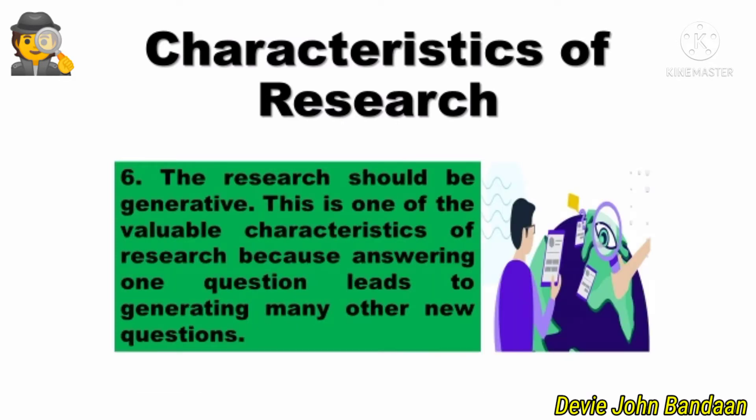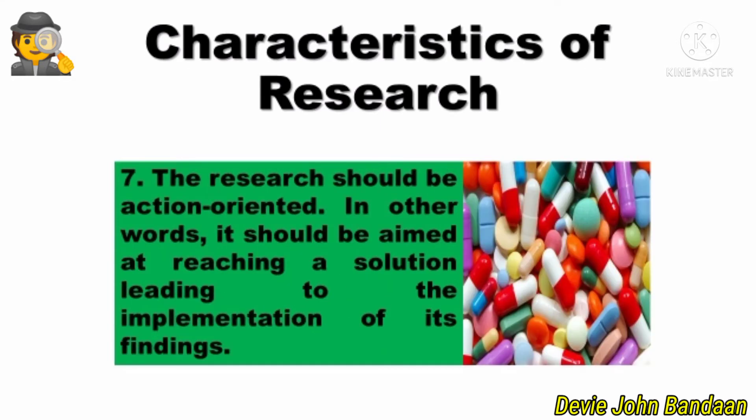Number six: the research should be generative. This is one of the valuable characteristics of research because answering one question leads to generating many other new questions. Number seven — and for me this is the most important characteristic — the research should be action-oriented. In other words, it should be aimed at reaching a solution leading to the implementation of its findings. The research should be action-oriented or output-based.